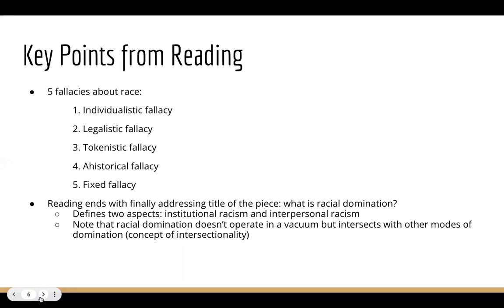The tokenistic fallacy is when you point to some people of color who have gotten ahead and achieved positions of power in the larger social structure — someone like President Obama, Oprah Winfrey, or Colin Powell. The fact that they exist at these high levels doesn't mean these pathways and opportunities are easily accessible or held by minorities in any real significant numbers. The presence of tokens does not mean racism doesn't exist.